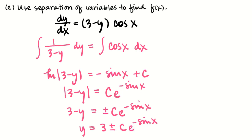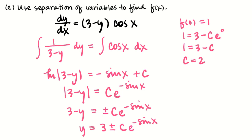Now I'm going to find the value of c using my initial condition, which was f(0) equals 1. So when x equals 0, y equals 1: 1 equals 3 minus c times e to the negative sine of 0. Since sine of 0 is 0, that's basically 3 minus c, so c equals 2. I am definitely using the minus. In conclusion, I've got y equals f(x) equals 3 minus 2e to the negative sine x.